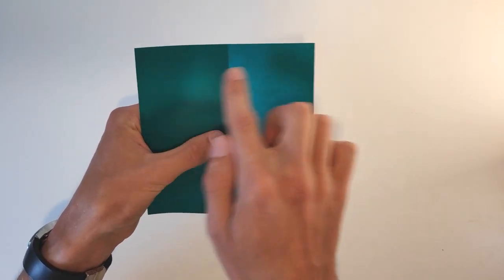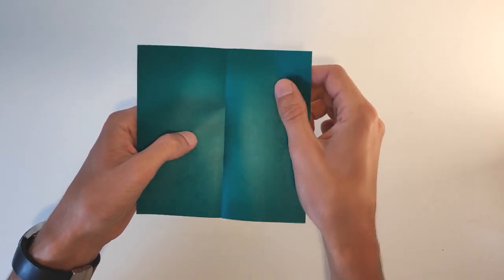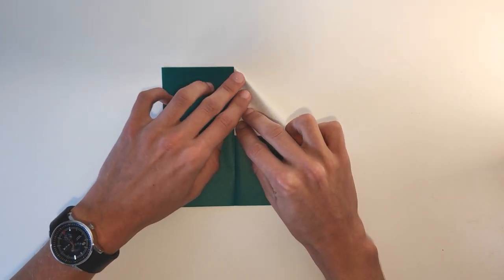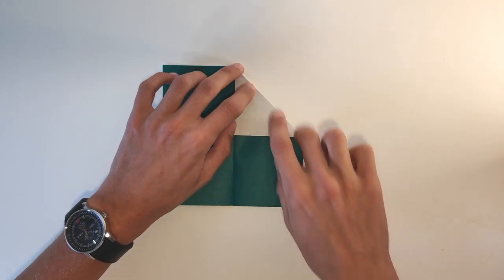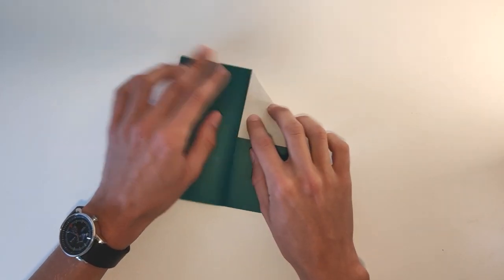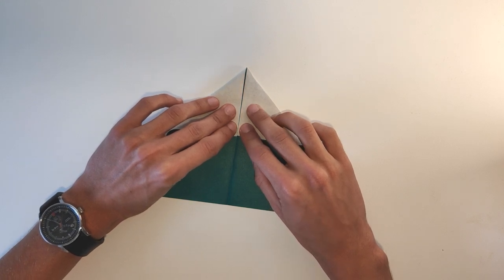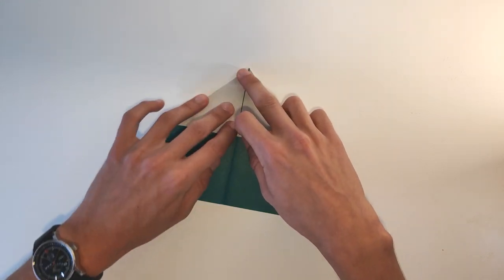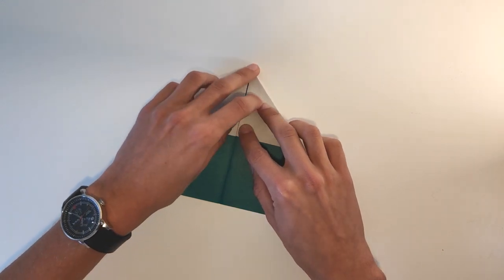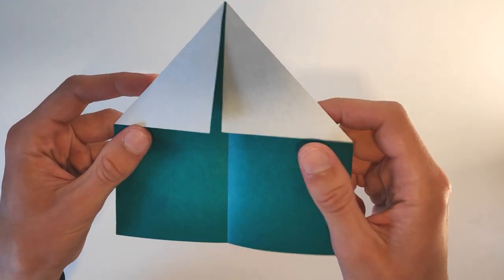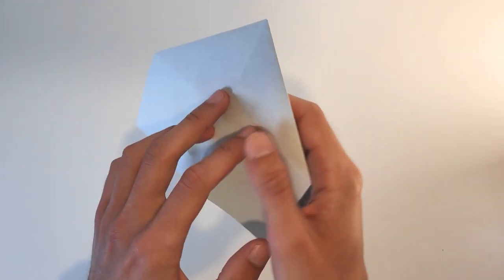Now fold these two corners to the middle crease. Like this. Now turn the paper over.